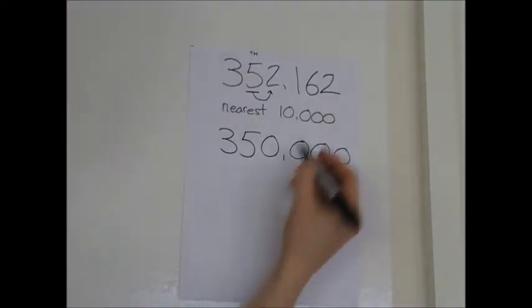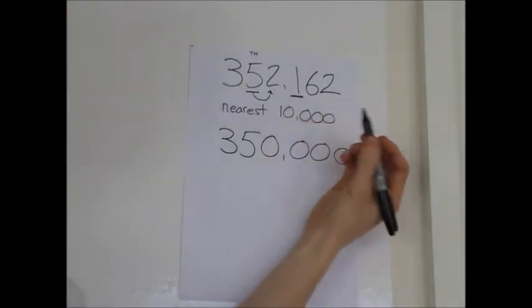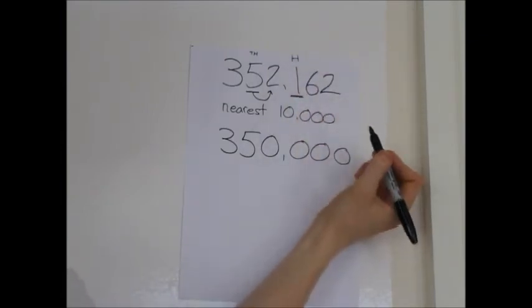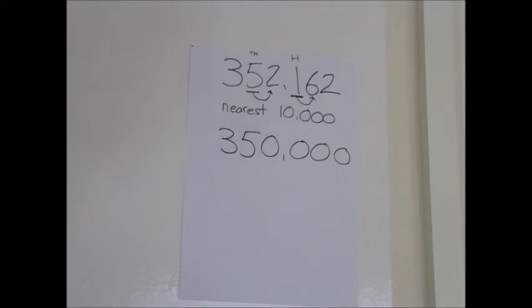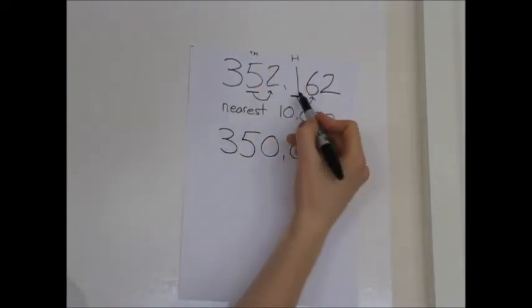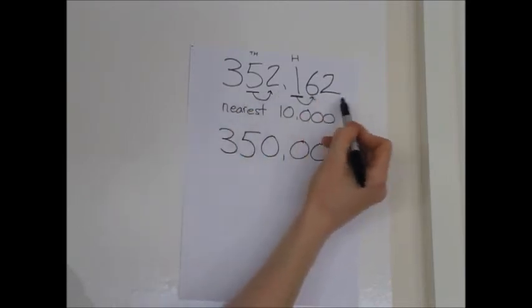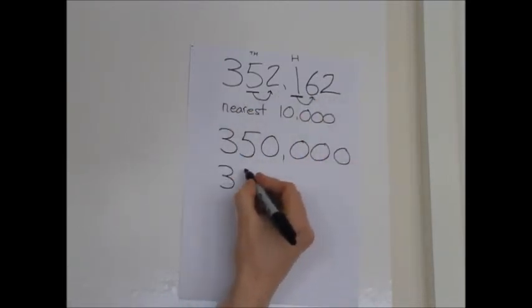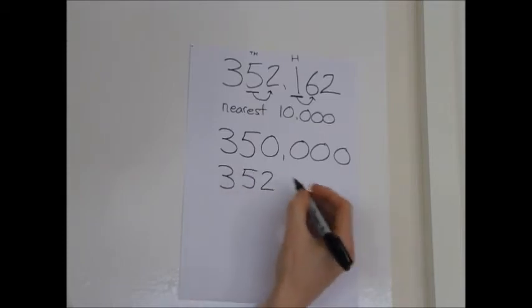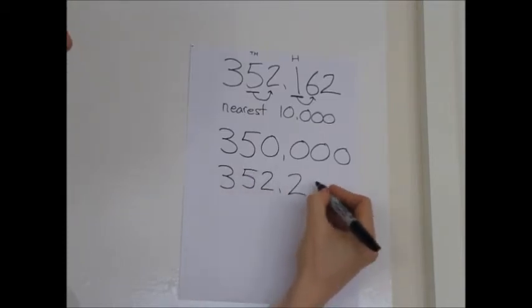Alright, now let's do it to the nearest hundred, why not. So we're going to look at this digit here, so it's the one, I know it's the one hundreds. I'm going to look next door. Ah, it's a six this time, it's five or greater, I'm going to move up. I'm going to add one more to the hundreds to make a two. All the digits stay the same, everything behind it be zero. So it should be three hundred and fifty two thousand, two hundred.